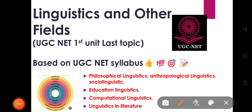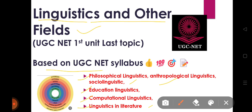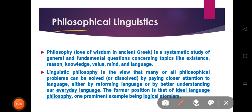Welcome back to the channel Basic Linguistics. Today we are discussing linguistics and its relation with other fields — like philosophy, anthropology, sociology, education, computer science, and literature. These relations give us terms like philosophical linguistics, anthropological linguistics, sociolinguistics, educational linguistics, computational linguistics, and linguistics and literature. This is based on the first unit syllabus, so let's start.